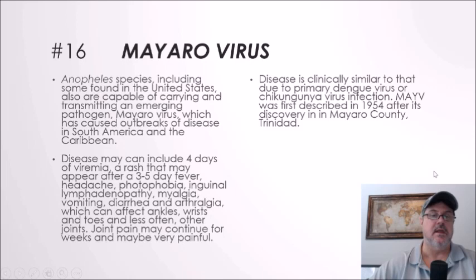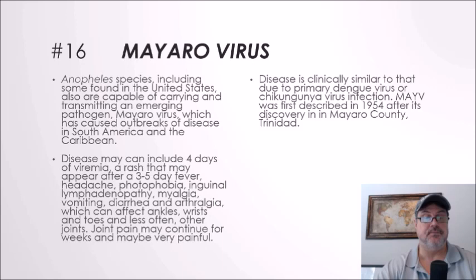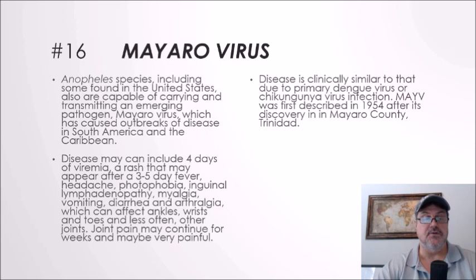Number sixteen: Mayaro virus. Anopheles species, including some found in the United States, are capable of carrying and transmitting Mayaro virus, which has caused outbreaks in South America and the Caribbean. Disease can include four days of viremia, a rash appearing after three to five days of fever, headache, photophobia, enlarged lymph nodes, myalgia, vomiting, diarrhea, and joint pain affecting ankles, wrists, and toes. Joint pain may continue for weeks and can be very painful. Mayaro virus is clinically similar to primary dengue virus or chikungunya virus infection. It was first described in 1954 after discovery in Mayaro County, Trinidad.